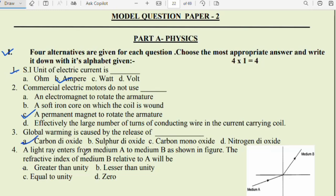Fourth question: a light ray enters from medium A to medium B as shown in the figure. The refractive index of medium B relative to A will be? See the picture children. The light ray enters from medium A to medium B and deviates away from the normal. So answer is option A, greater than unity.